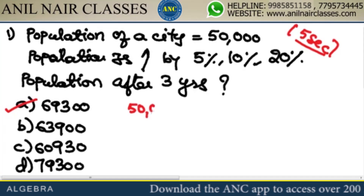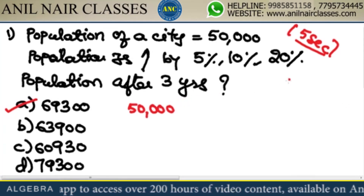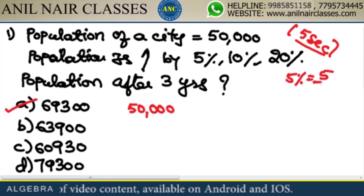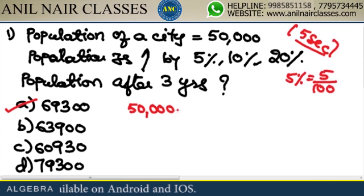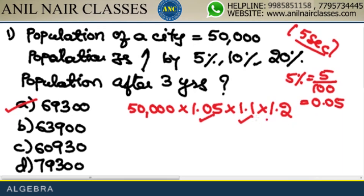Initially the population is 50,000. Population is increased by 5%. 5% is nothing but 5 by 100, so it is nothing but 1.05. 1.1 represents 110%, and 1.2 represents 120%. I hope this step is clear. First year is 5%, second year is 10%, third year is 20%.